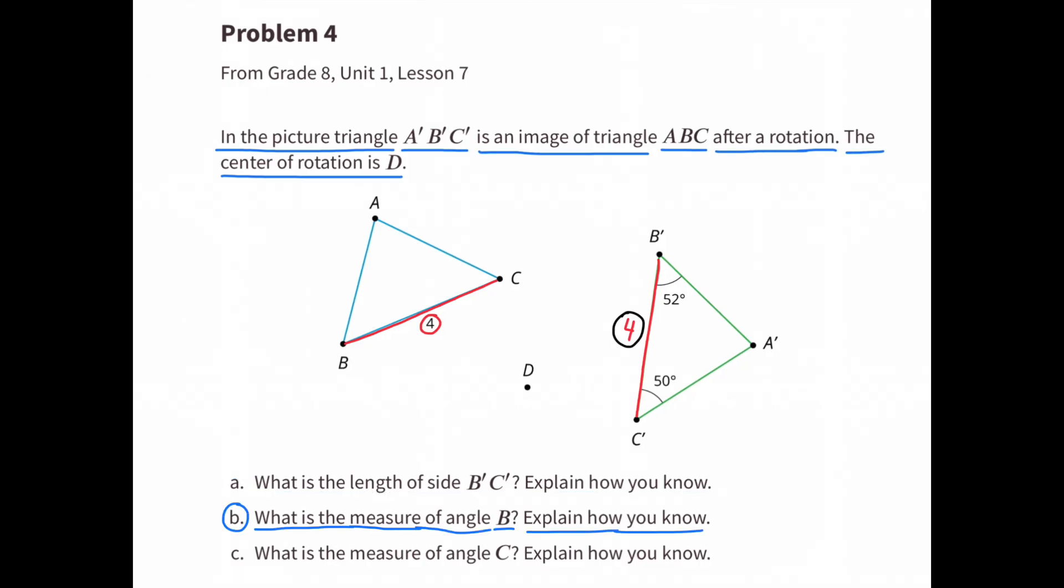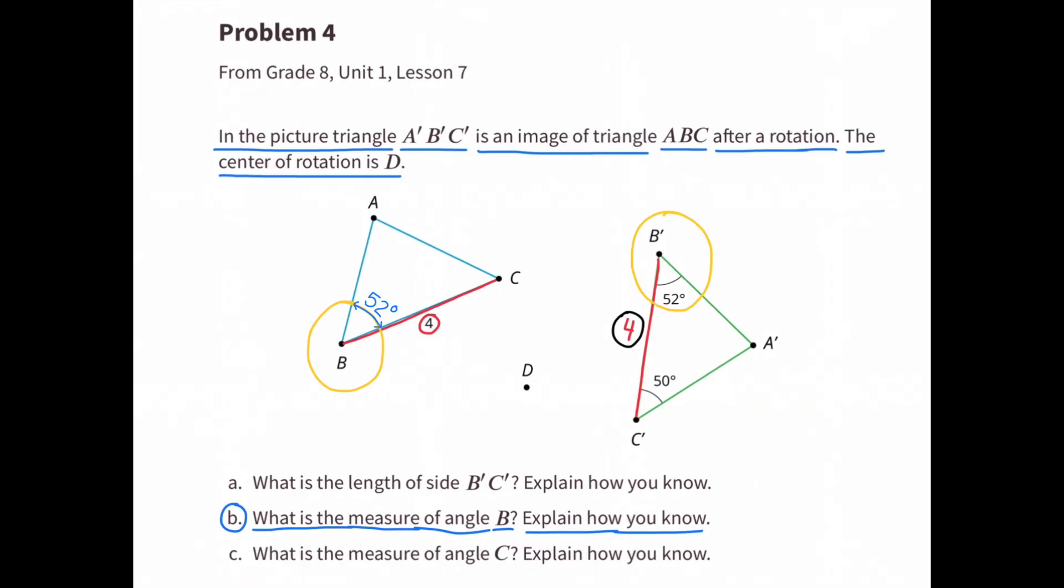B. What is the measure of angle B'? Explain how you know. The measure of angle B is 52 degrees and I know that because rotations maintain the same angle measures and angle B' and B correspond to each other.